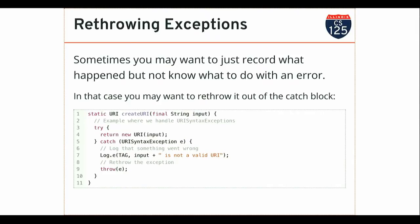One thing you can do with exceptions, because they're just objects, is you can re-throw them out of a catch block. Here's an example: I caught the exception briefly, did some stuff, recorded what happened using logging code, and now I'm just throwing it again out of the catch block. This code will now throw that exception. The declaration of this function needs to declare that it throws a URISyntaxException, because I'm throwing it out of the catch block. This is a pattern you can use when all you want to do is record a little bit about what happened but you can't handle the exception.